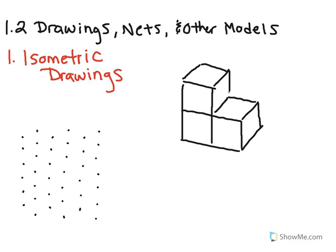This is section 1.2, which goes over drawings, nets, and other models. We're going to go over three main types of drawings.